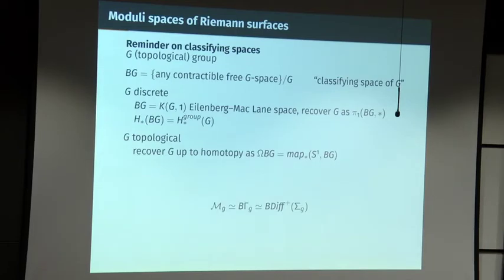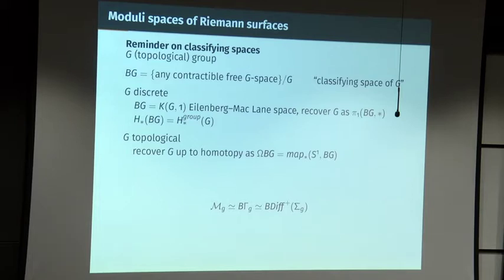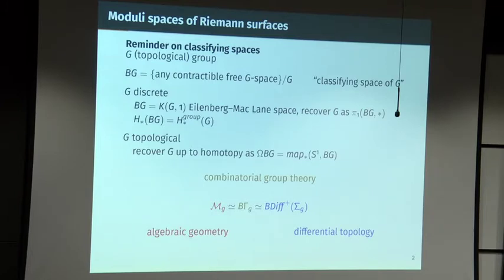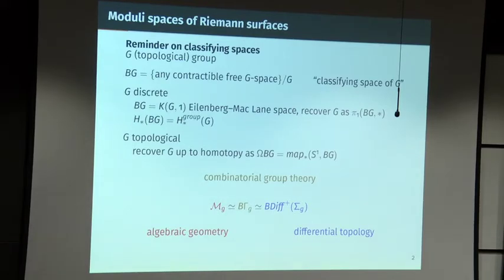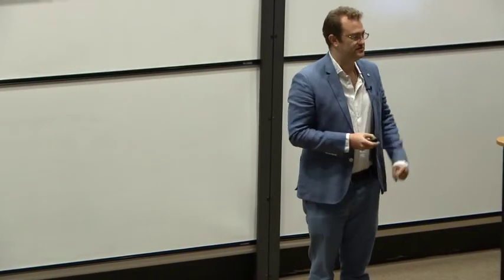There are three descriptions of the moduli space of Riemann surfaces: as a set-theoretic thing whose points are Riemann surfaces up to isomorphism; as the classifying space of the mapping class group, a discrete group; and as the classifying space of the group of diffeomorphisms of that manifold, a topological group. The reason studying Riemann surfaces is so interesting is that these are three different worlds that intersect at this very miraculous point — algebraic geometry, combinatorial group theory, and differential topology.